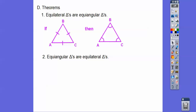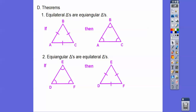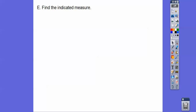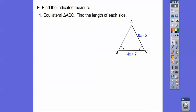The converse of this theorem says equiangular triangles are also equilateral triangles. So if you see three equal angles in a triangle, all three sides are equal. We're going to use these theorems to find values of sides and angles. So: find the indicated measures — we have an equilateral triangle, meaning this side equals this side equals this side.